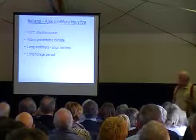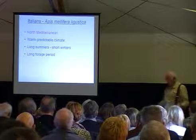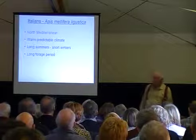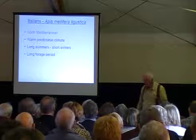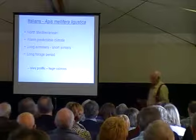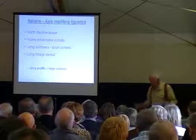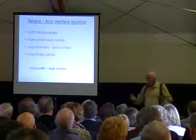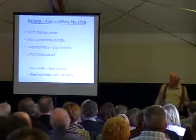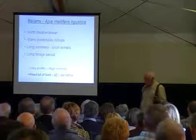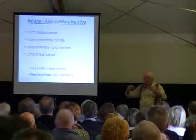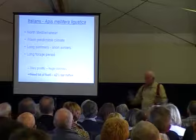I've spoken to beekeepers from Tuscany, and their bees are bringing in good quantities of nectar for ten months of the year. So they have a long forage period, and the queens became very prolific, building up huge colonies. There's plenty of bees to go out and get whatever forage there is. Cooper suggests that they need two and a half times the amount of food compared to native bees, just for maintenance purposes - just to keep them going throughout the year.